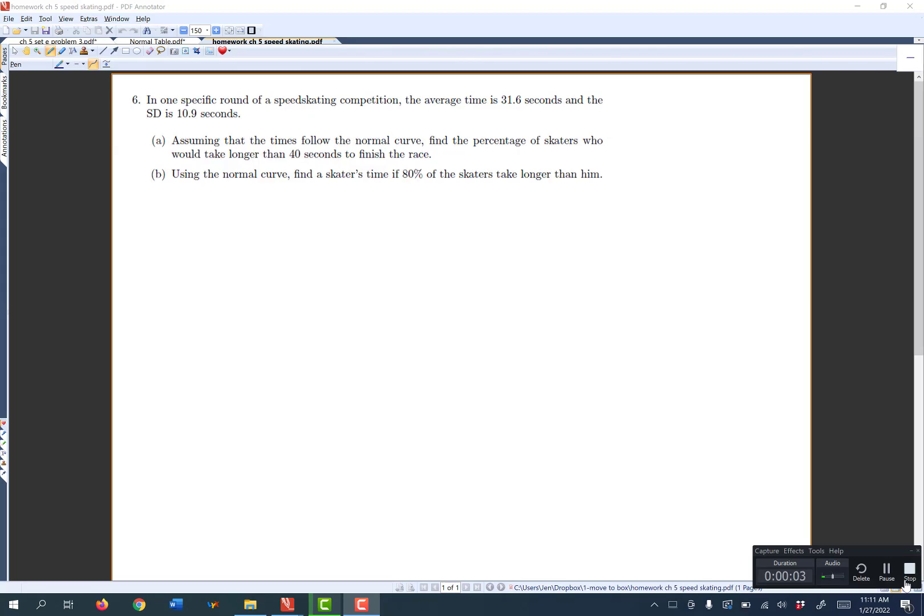This is number 6 on the homework. It says in one specific round of a speed skating competition, the average time is 31.6 seconds and the standard deviation is 10.9 seconds. So I like to write down the information it gives me. My average equals 31.6. The standard deviation equals 10.9.